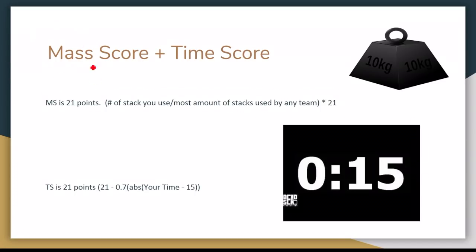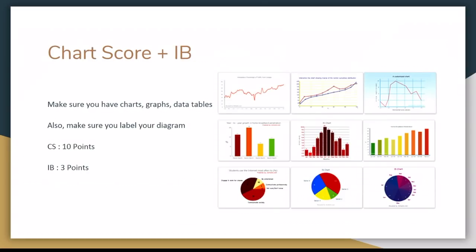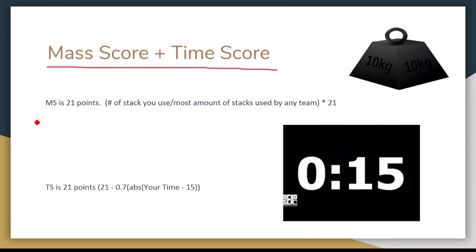So when you're doing the score, you have your mass score, time score, and if you go to the next slide, you have chart score and impound bonus. So your mass score is 21 points, which is the number of pennies you use. So you use 8 divided by the most amount of stacks anyone uses. So say another team uses 16. So 8 divided by 16, multiply that by 21, and you would have a score of 10.5.